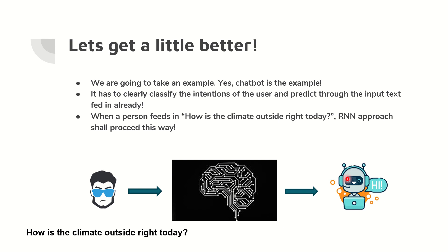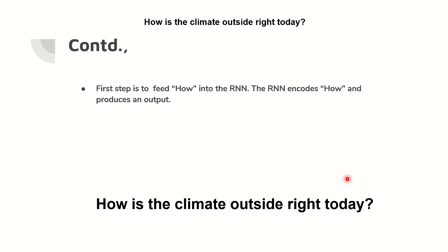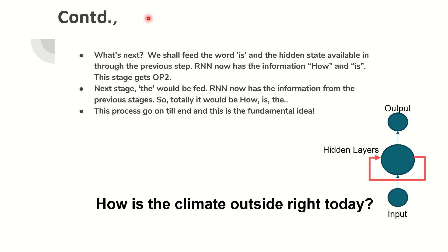Let's take a chatbot example. Someone asks the chatbot: 'How is the climate outside today?' The first step in RNN is to feed the word 'how' — the first word of the question — into the RNN. The RNN encodes 'how' and produces an output for the first stage. Then the second word 'is' is sent into the RNN for the next stage.